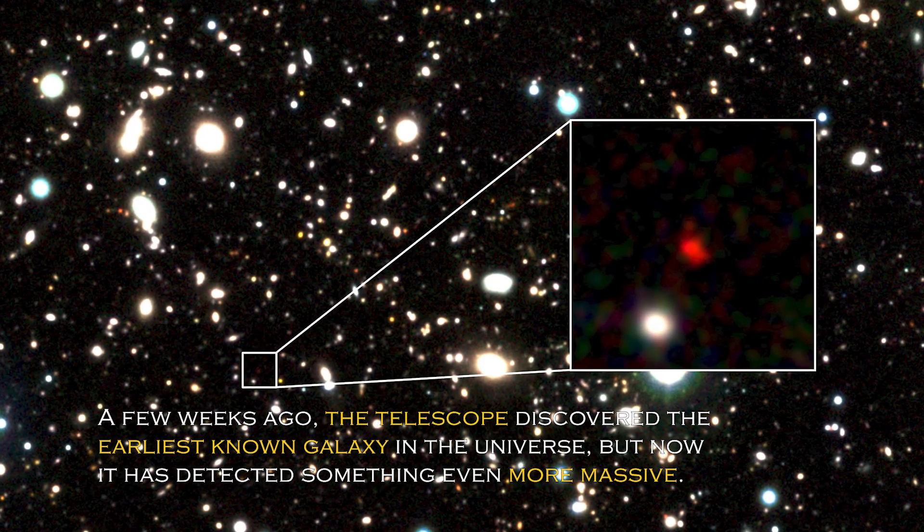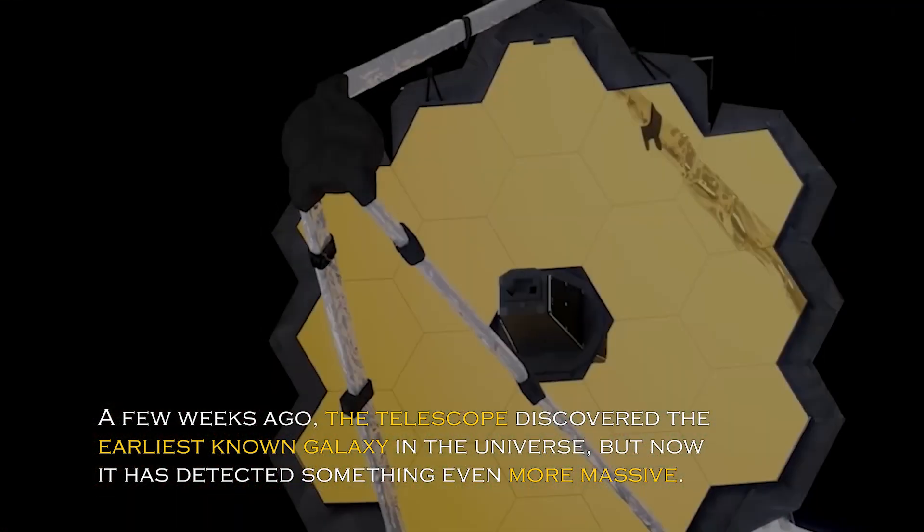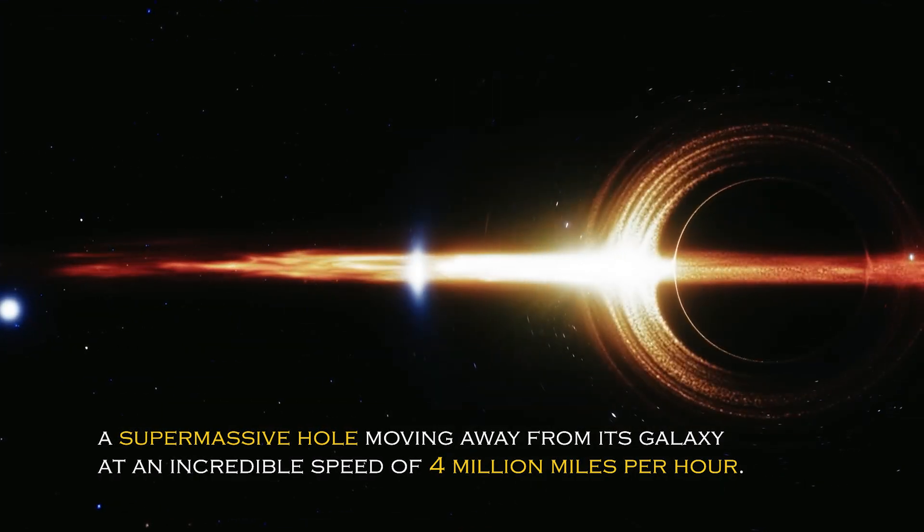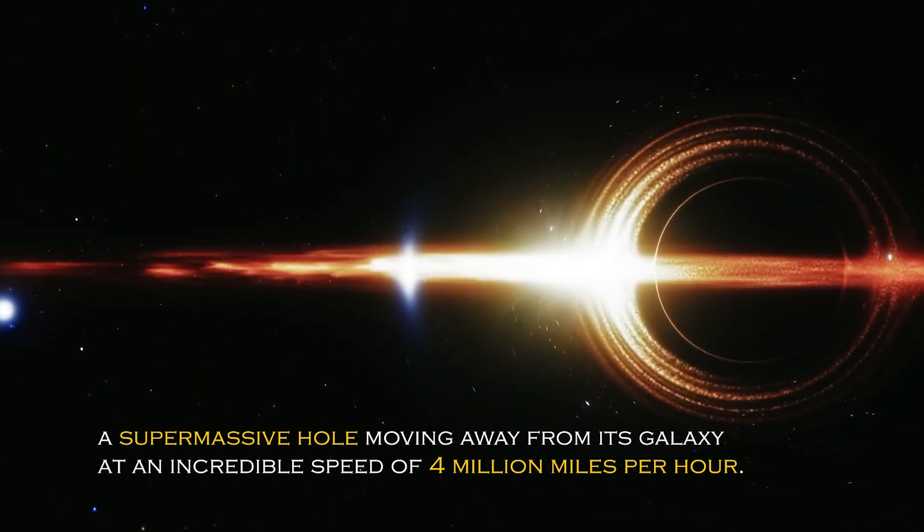A few weeks ago, the telescope discovered the earliest known galaxy in the universe, but now it has detected something even more massive – a supermassive hole moving away from its galaxy at an incredible speed of 4 million miles per hour.